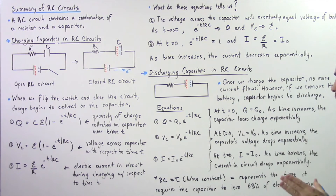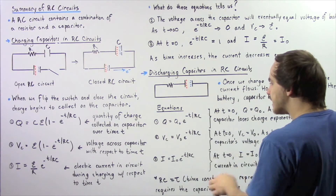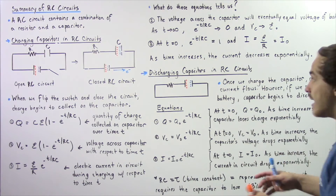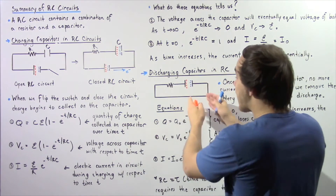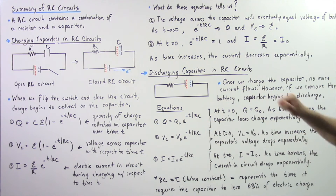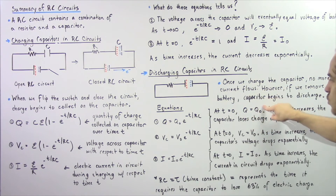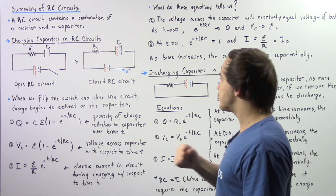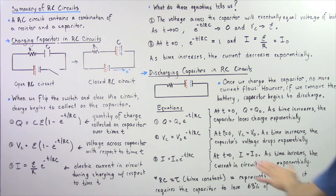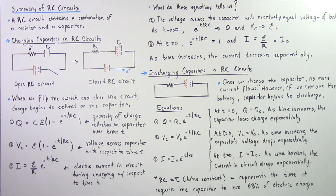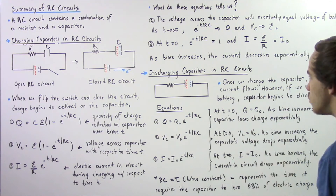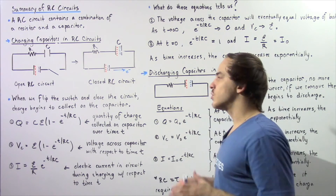Equation one for discharging: Q is equal to Q-naught multiplied by E raised to the power of negative T divided by RC. We define time equals zero as the moment we remove the battery from the circuit. At time equals zero, Q equals Q-naught because the exponential term becomes one. Q-naught represents our initial maximum electric charge stored on our capacitor. As time increases, the capacitor loses charge exponentially, and as time approaches infinity, the quantity of charge approaches zero — meaning the capacitor will be completely discharged.